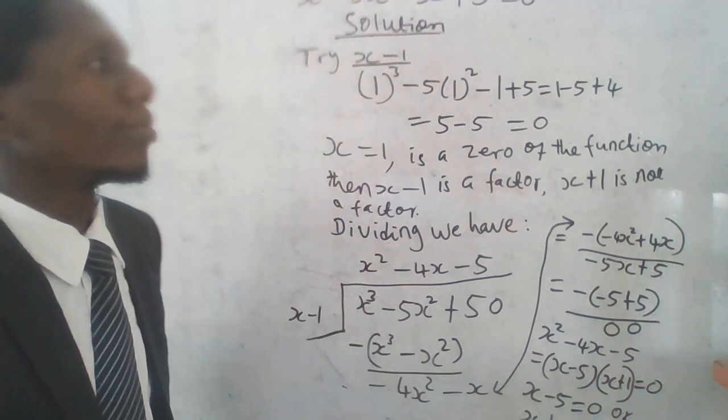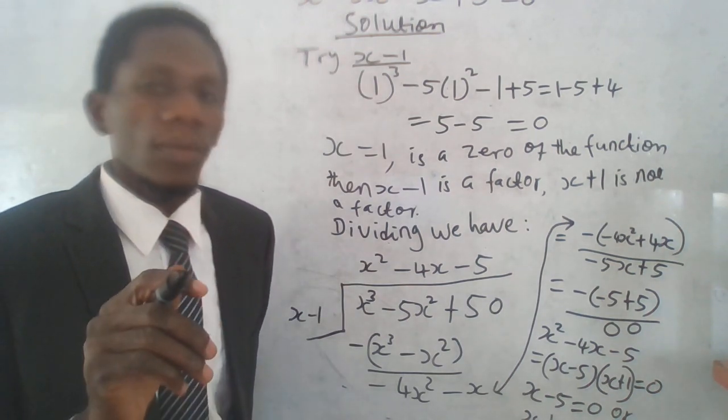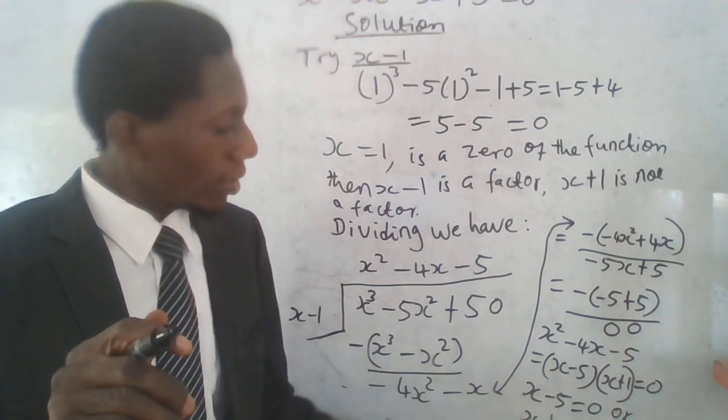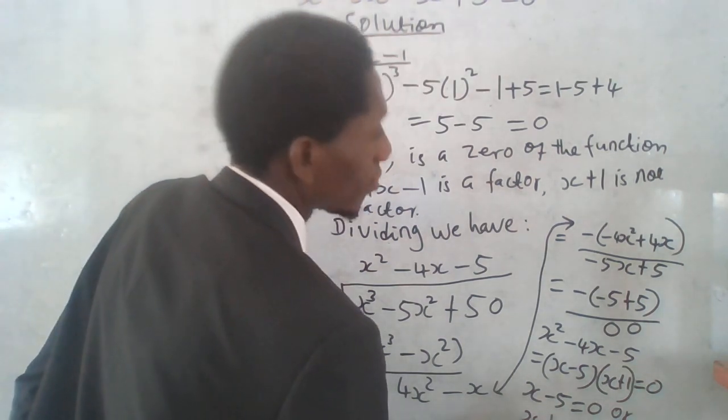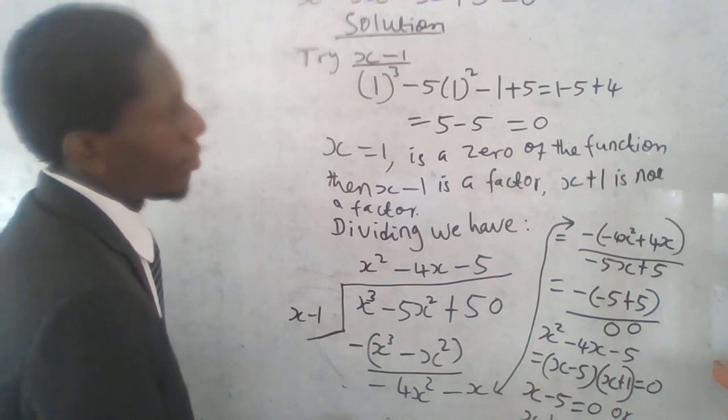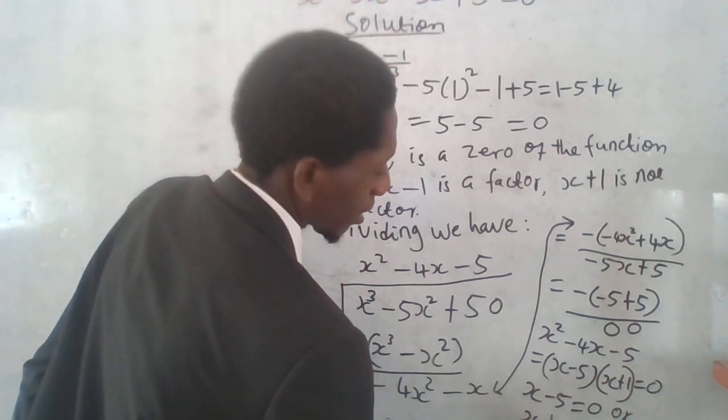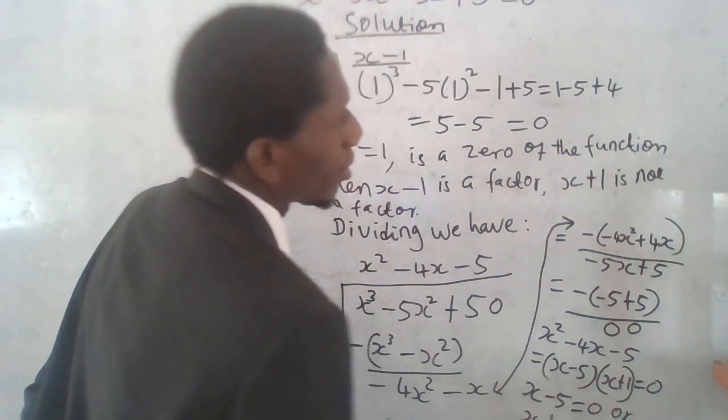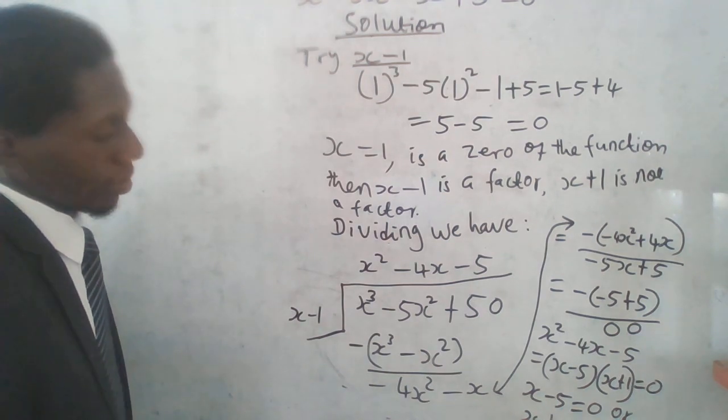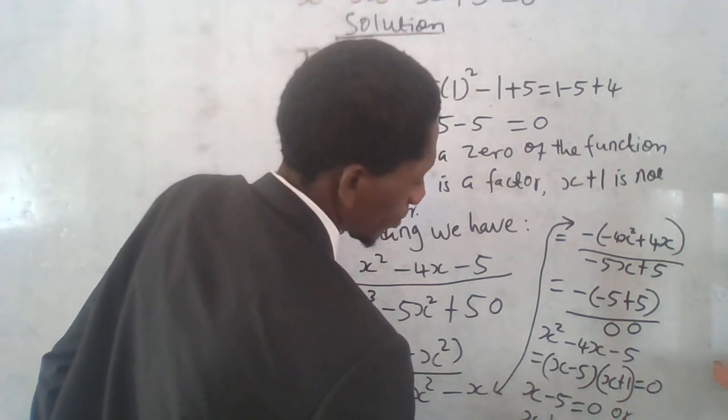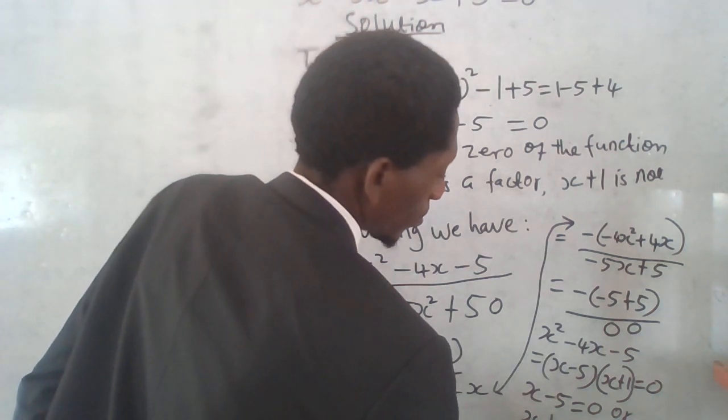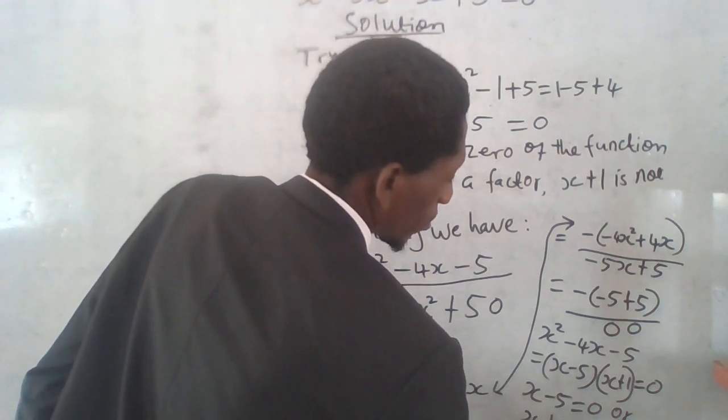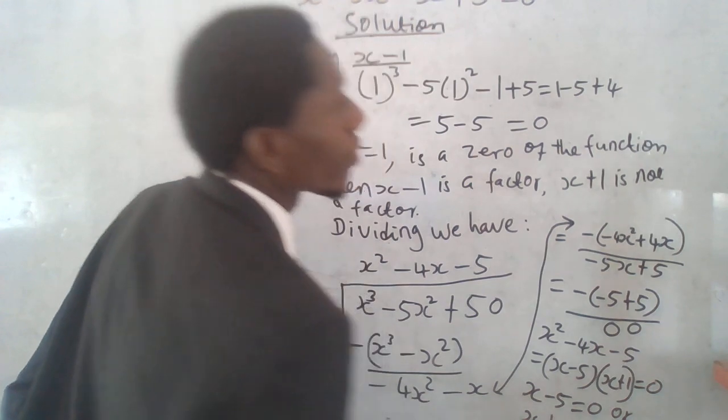And then from here we'll be able to work the solution out. I have x minus 5 to be equals to 0, or x plus 1 to be equals to 0. So x minus 5 and x plus 1. x is equals to 5, or minus 1. Or x is equals to minus 1.